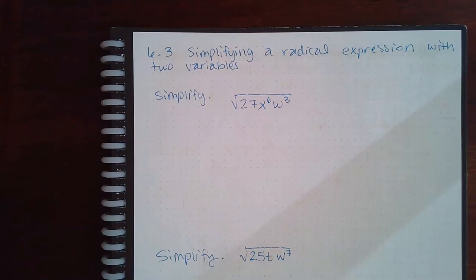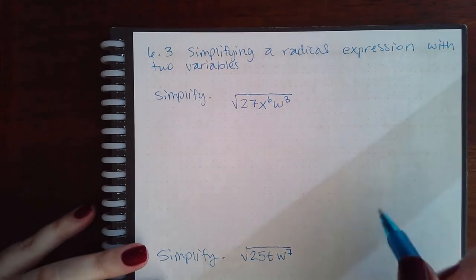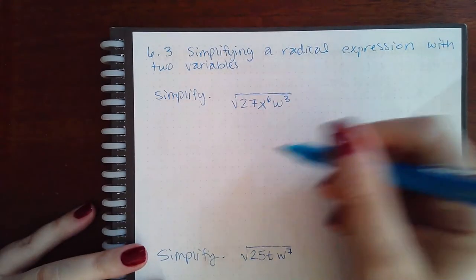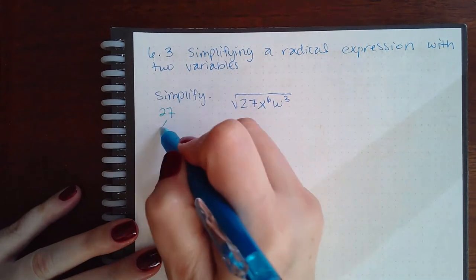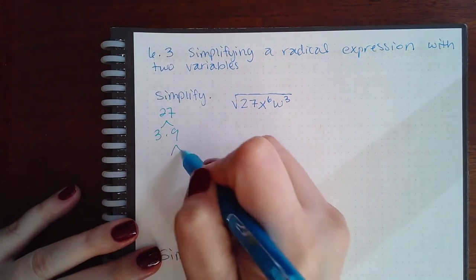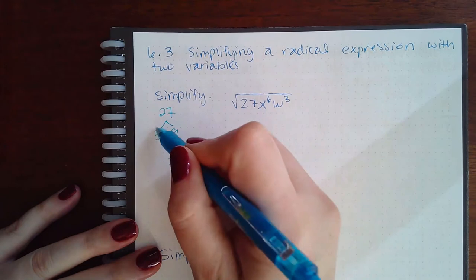Here we have simplifying a radical expression with two variables. It doesn't mean anything different - we're just going to have another variable in the problem. So 27 is 3 times 9, which is 3 times 3. I do need